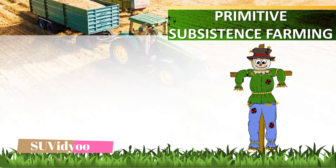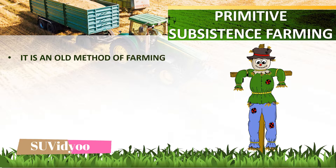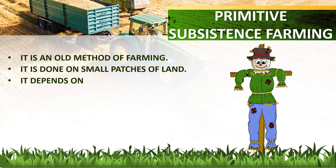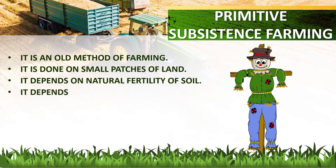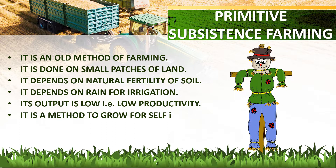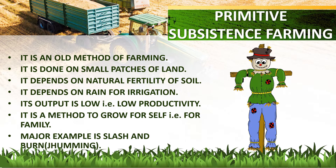Primitive subsistence farming is an old method of farming. It is done on small patches of land. It depends on natural fertility of soil and rain for irrigation. Its output is low, i.e., low productivity. It is a method to grow for self, i.e., for family. The major example of primitive subsistence farming is slash and burn, also known as jhuming.